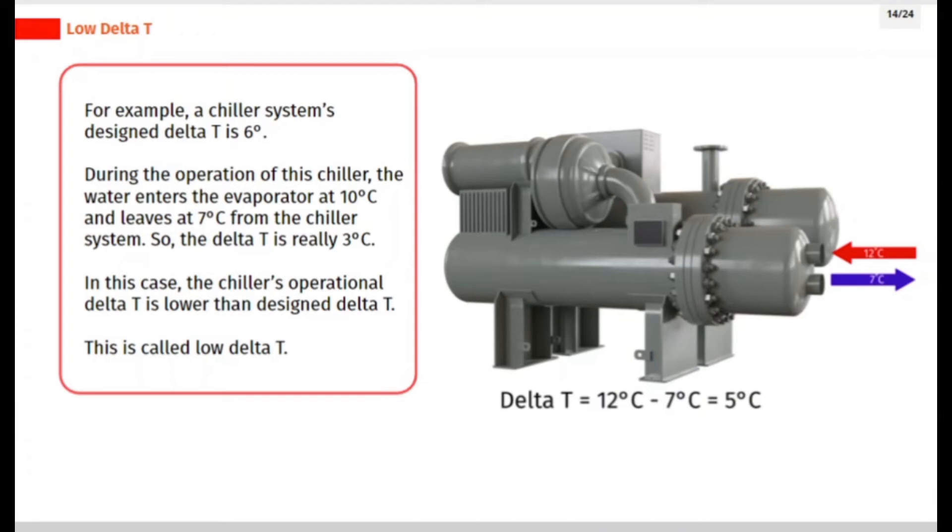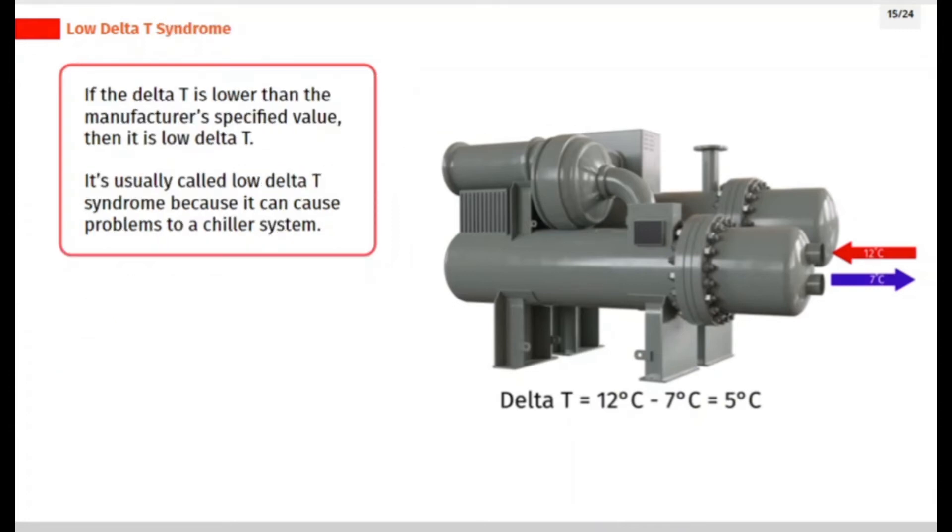In this case, the chiller's operational delta T is lower than design delta T. This is called low delta T. If the delta T is lower than the manufacturer's specified value, then it is low delta T. It's usually called low delta T syndrome because it can cause problems to a chiller system.